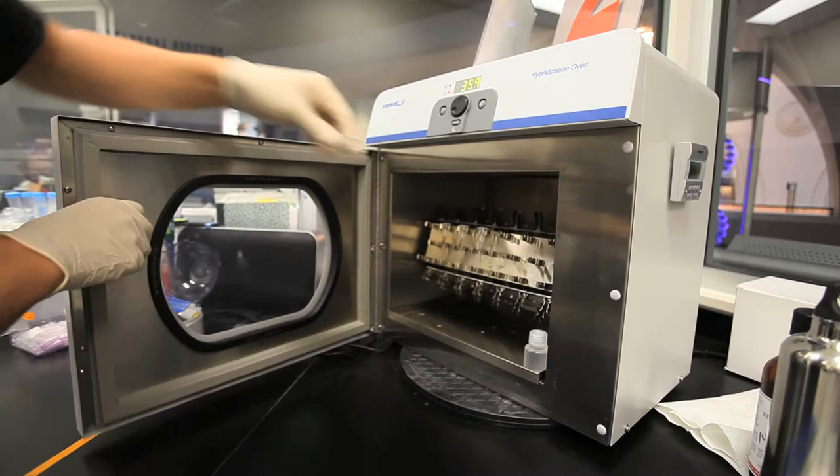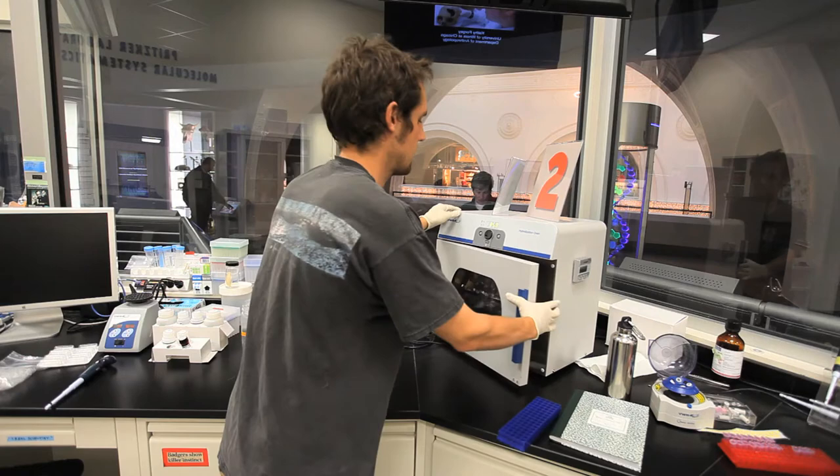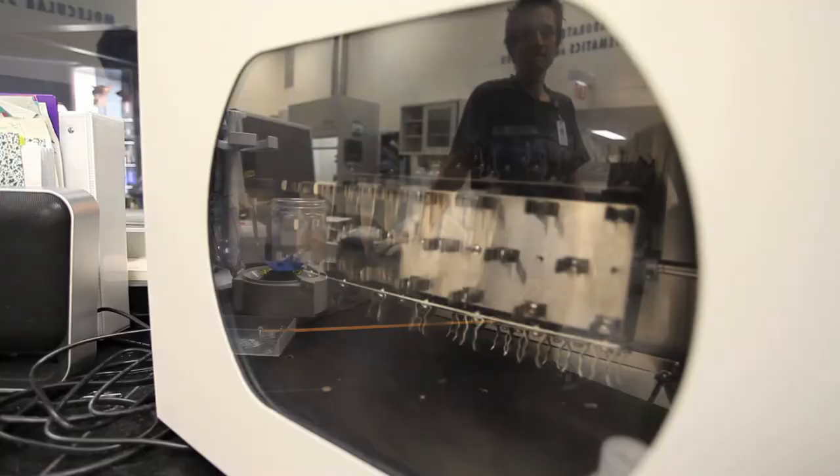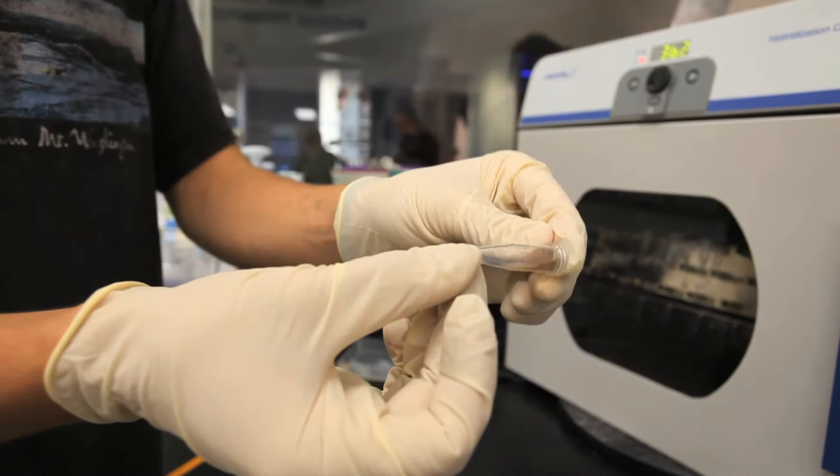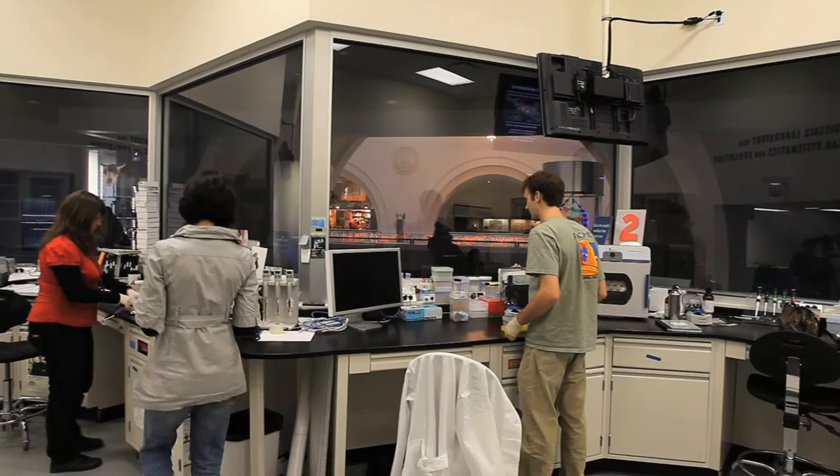After we've added the chemicals to the individual ants, we put them into the hybridization oven, which will incubate and rotate that for two hours to overnight. Once it comes out of that oven, we'll do the remaining steps within the chemical reaction to ensure that we have the clean DNA and nothing else left in that sample.